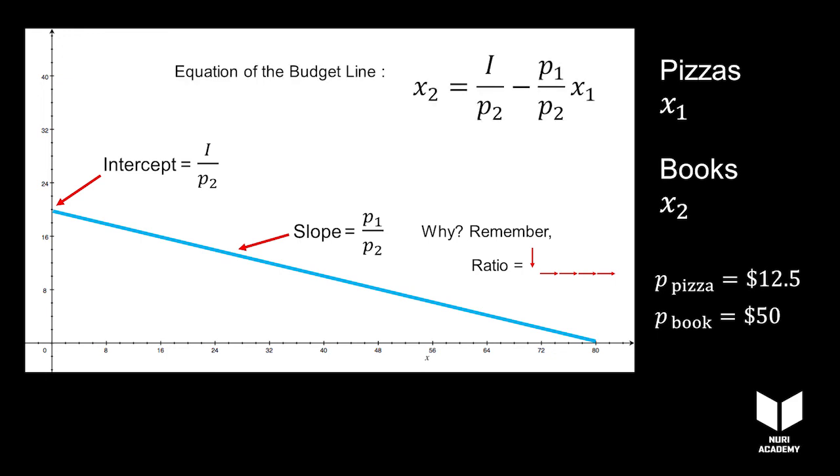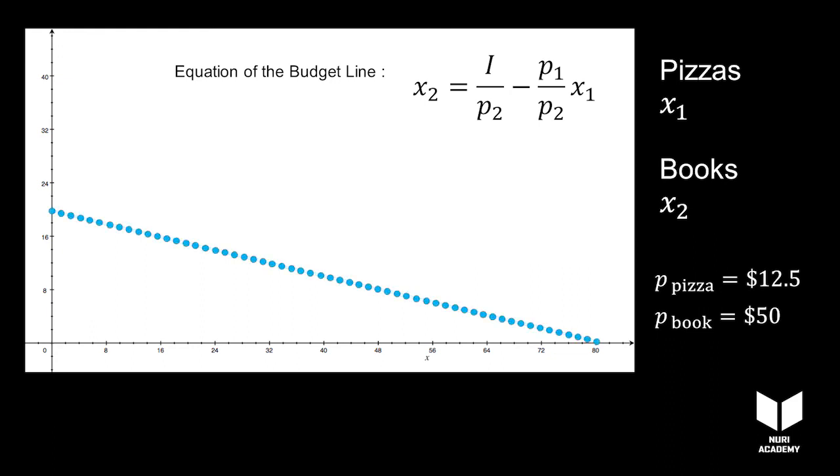Since in this example we deal with a fairly low number of commodities, it's more of a dotted line than a genuine continuous line. We'll see why it can be treated as a line in the next episode.